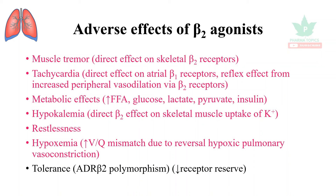Tolerance may also occur. There is a known polymorphism — the ADR beta-2 polymorphism — that decreases the number of beta-2 receptors, effectively decreasing the beta-2 receptor reserve. This is a brief overview of the beta-2 agonists used as bronchodilators.